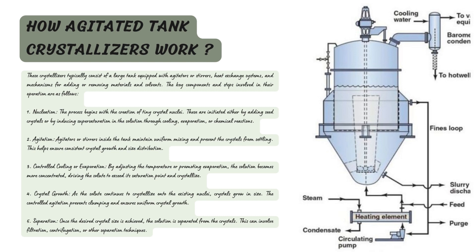In the working of the agitated tank crystallizer, the first step is nucleation. To kick-start the crystal-making process, you can add tiny starter crystals or make the liquid super-cool or concentrated. This process of inducing supersaturation is achieved through cooling, evaporation, or chemical reactions, and it is known as nucleation.